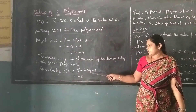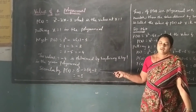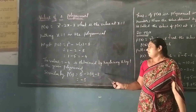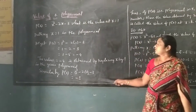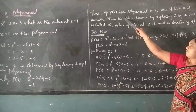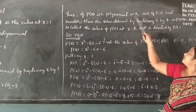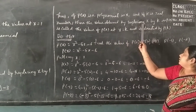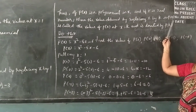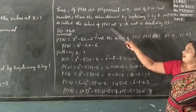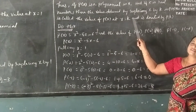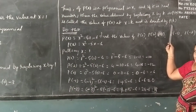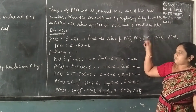For x = 0: 0² - 2 × 0 - 3 gives the value. Now, if p(x) is a polynomial and k is a real number, then the value obtained by substituting x = k in p(x) is denoted by p(k). This is the value of the polynomial.